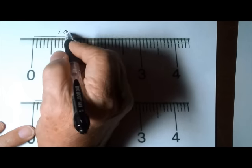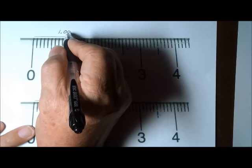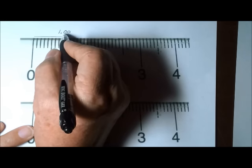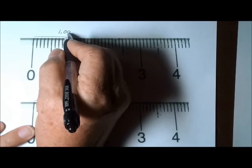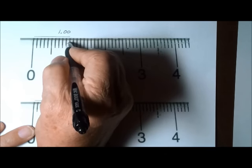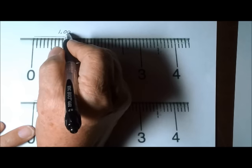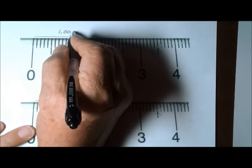Because we want to show the accuracy of the measuring device, which is that zero, plus one estimated position, and since it looks like it falls directly on that line, it's going to be 1.00 centimeters.